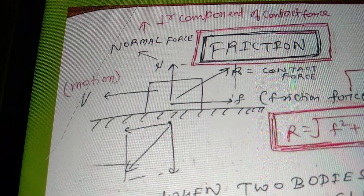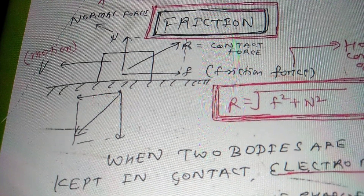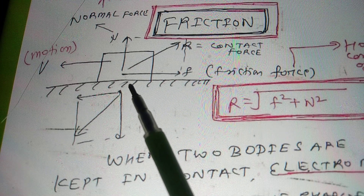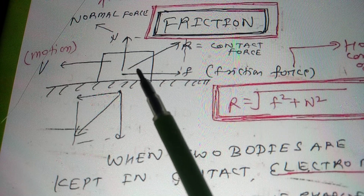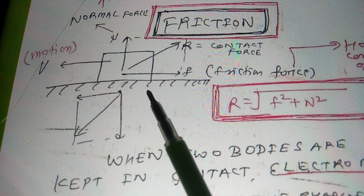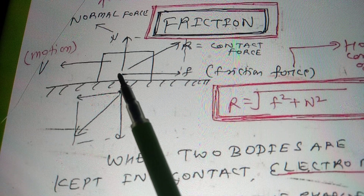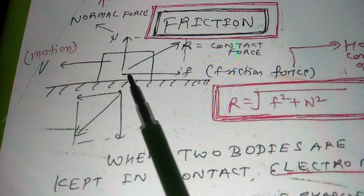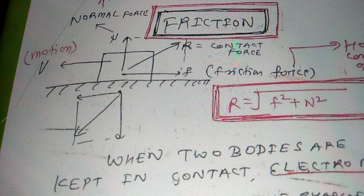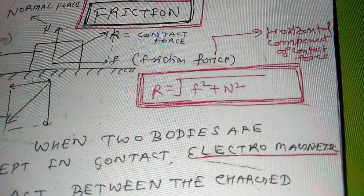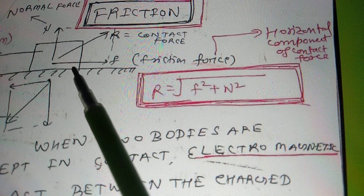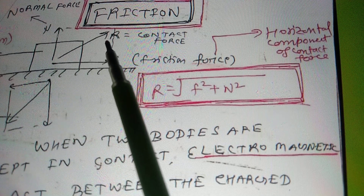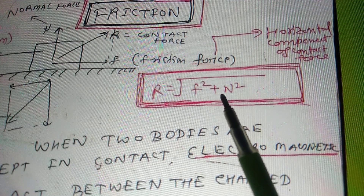So presently I am discussing the topic Friction. What is friction? Suppose one block is kept over any surface. There is the electromagnetic force between the two surfaces in contact, between the charged particles of the two bodies. There is the electromagnetic force — one component is along the surface and another is perpendicular to the surface. The horizontal force is known as the frictional force.